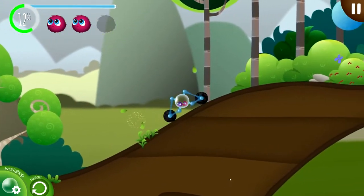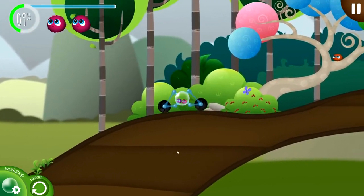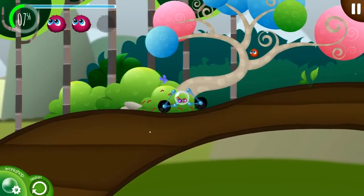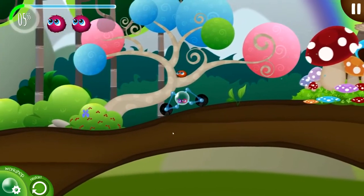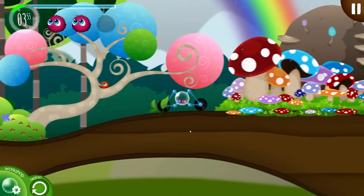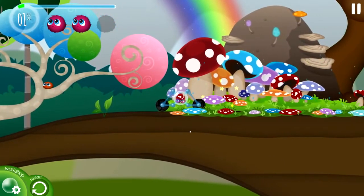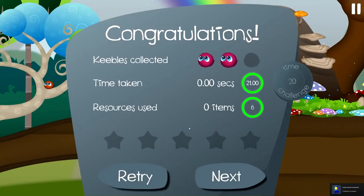We're going to notice a problem though, and that's that this last Keeble is somewhat higher up than our vehicle, so we're not going to be able to reach it. However, we'll let the vehicle go through, get to the finish zone, and we'll have a look at the scoring.